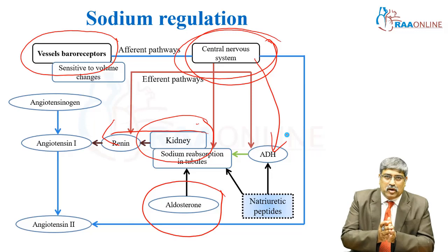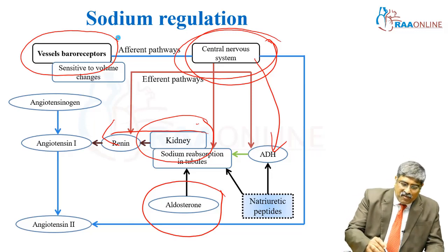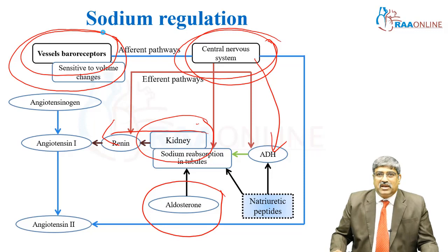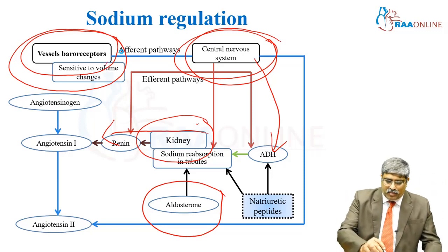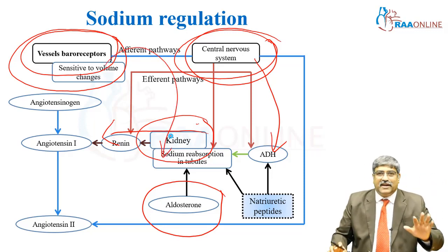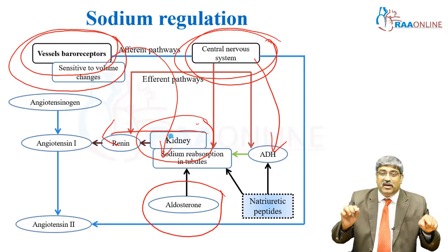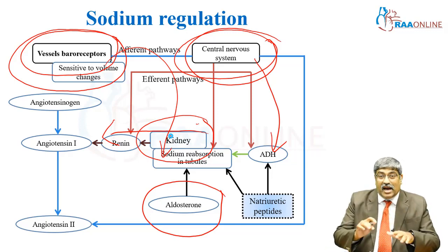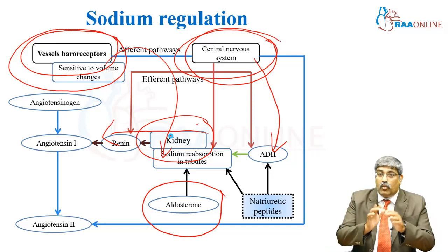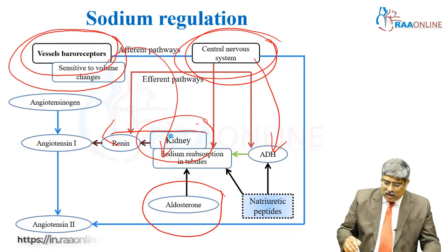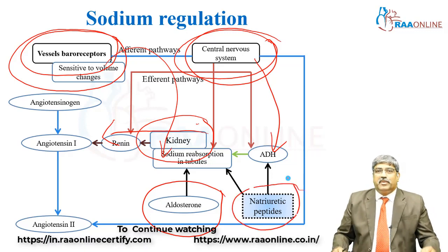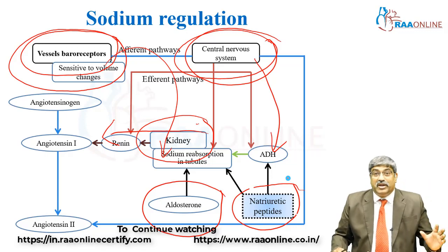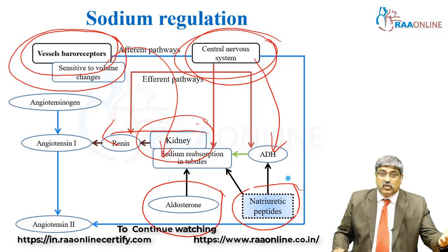Sodium absorption can happen, and whenever there is a volume loss, the baroreceptors get stimulated and automatically lead to a pathway where volume retention can happen. These are the various ways sodium and volume are regulated. There is also a natriuretic peptide from the heart to extrude sodium in case of volume overload.